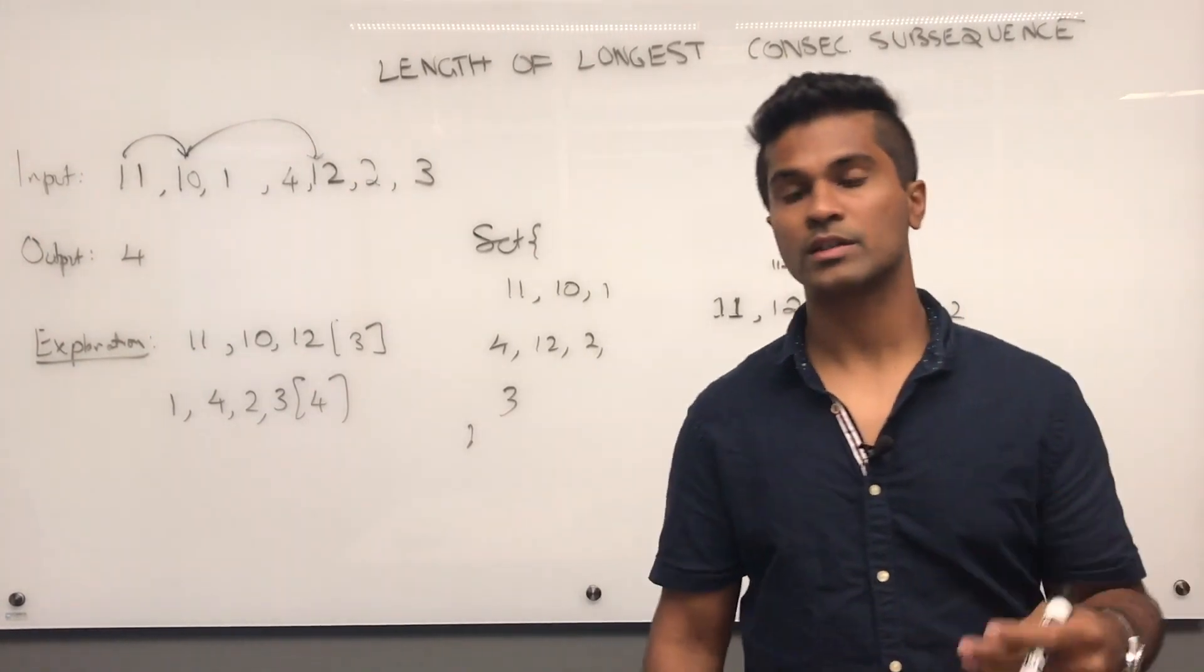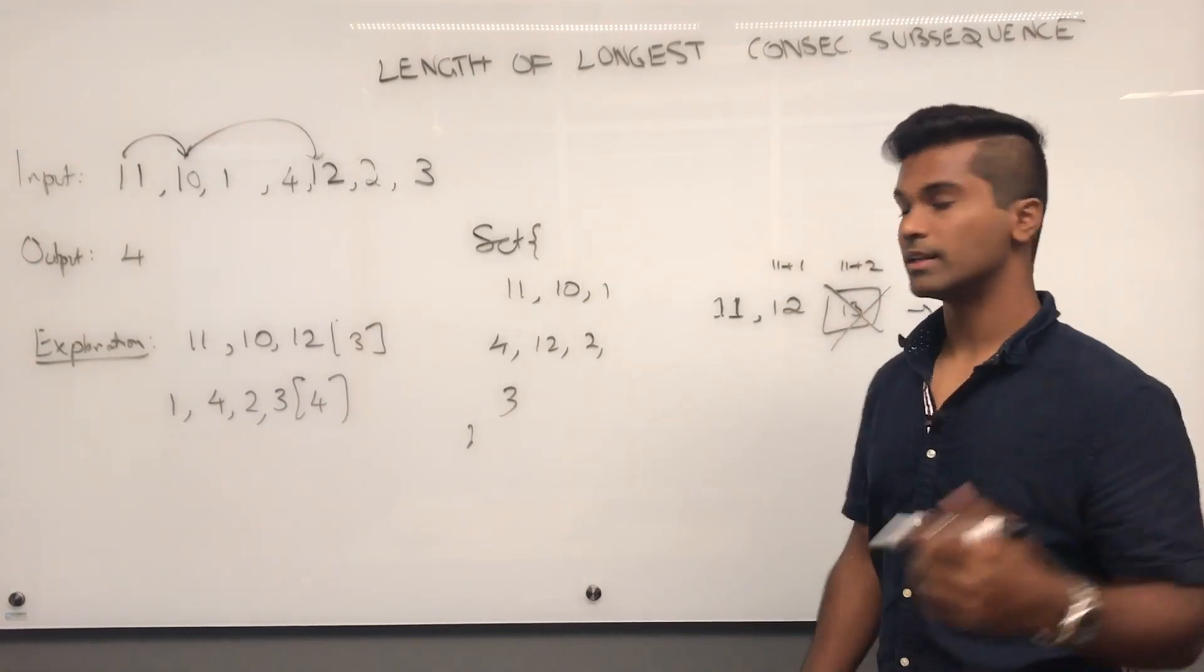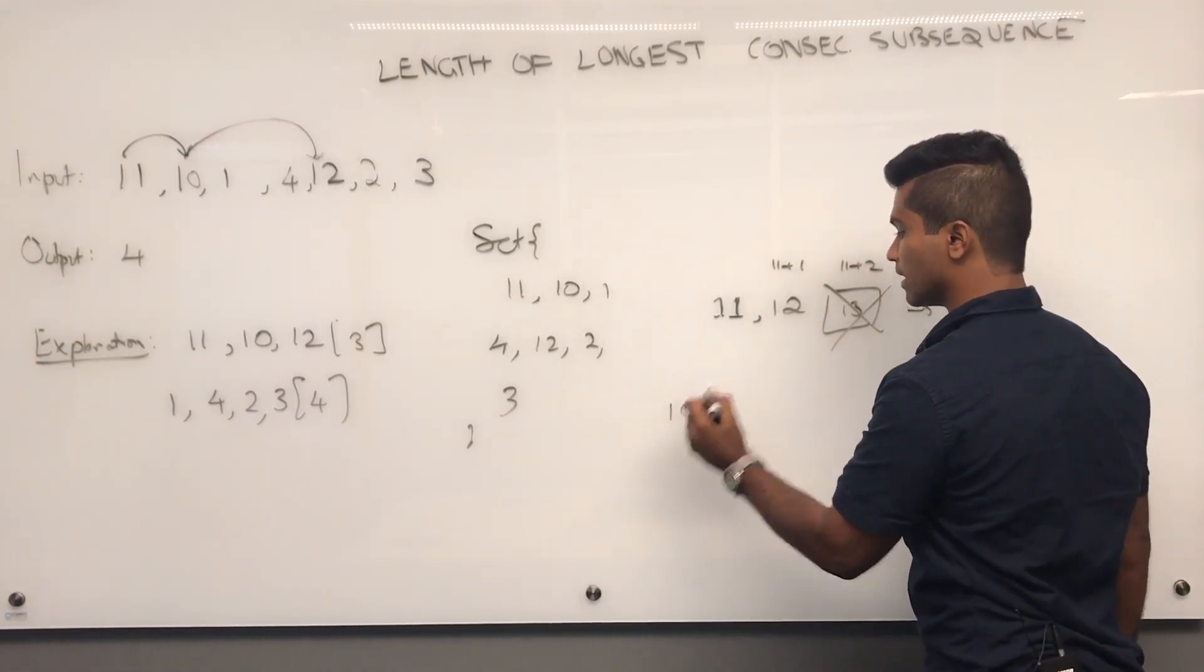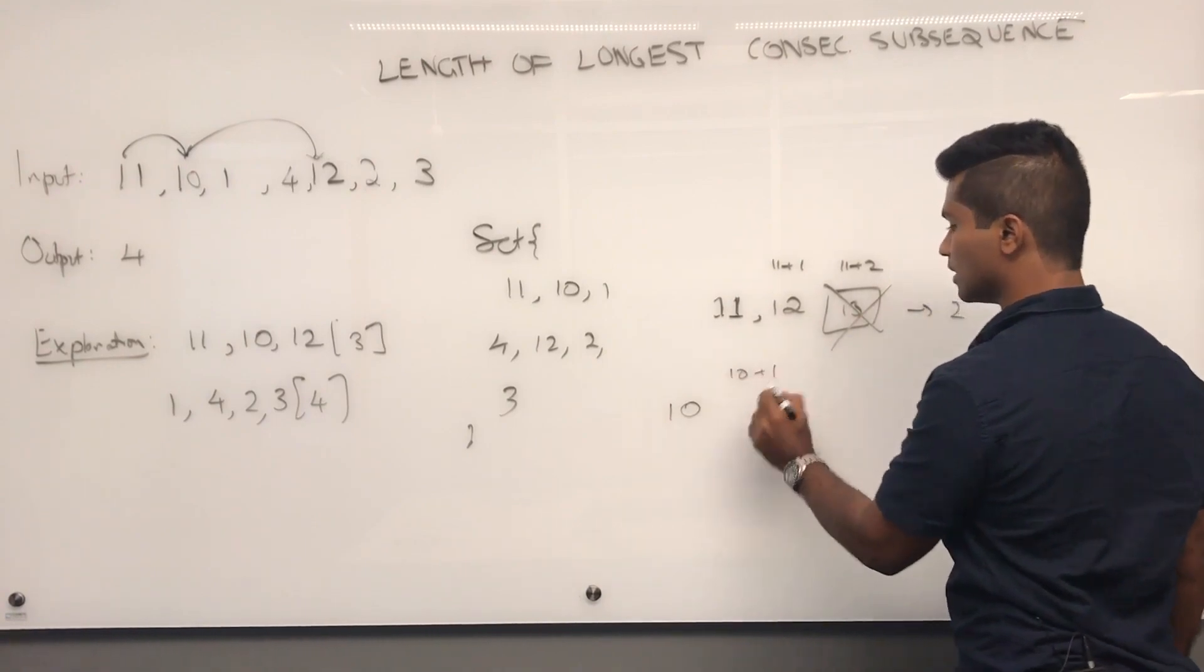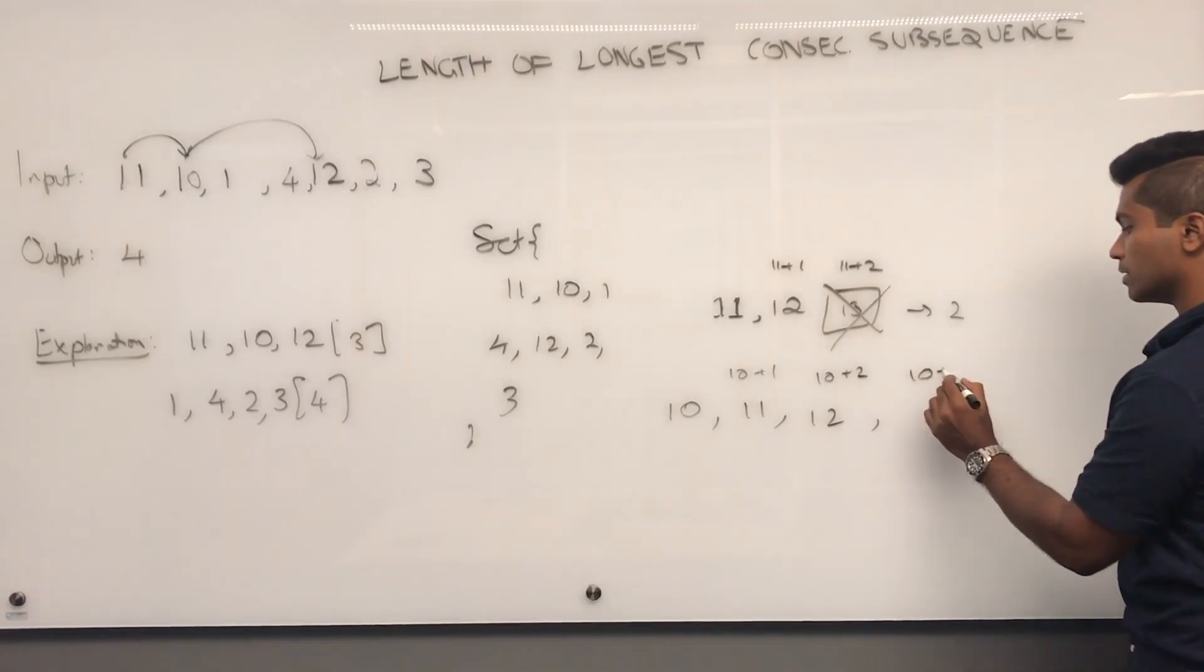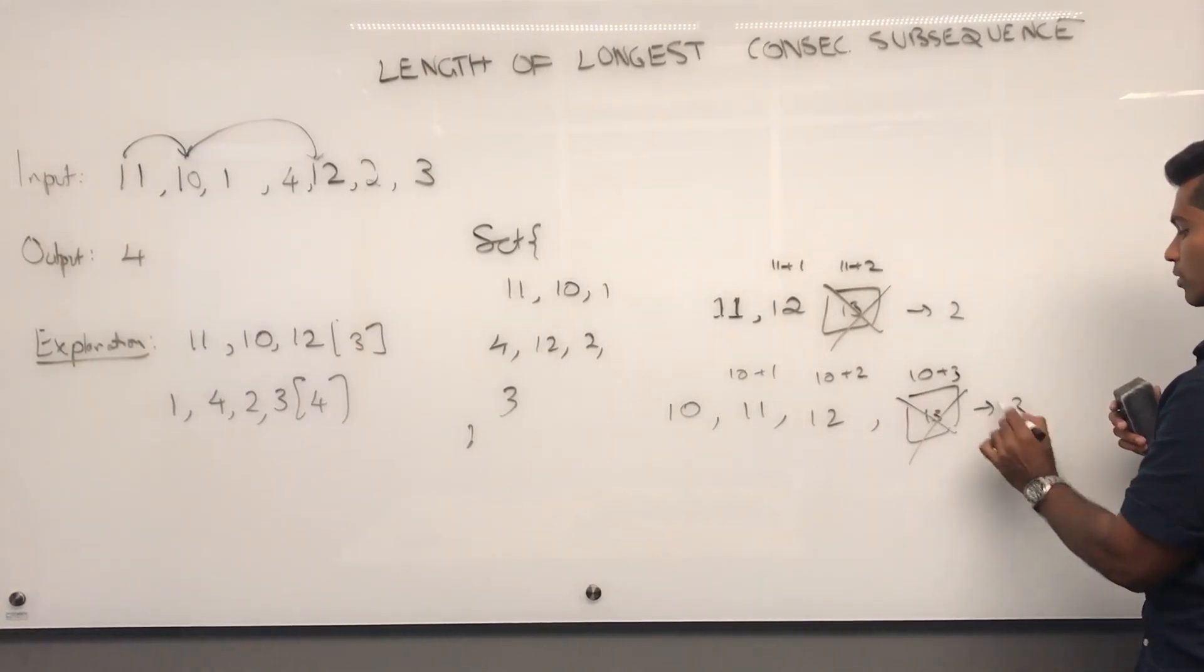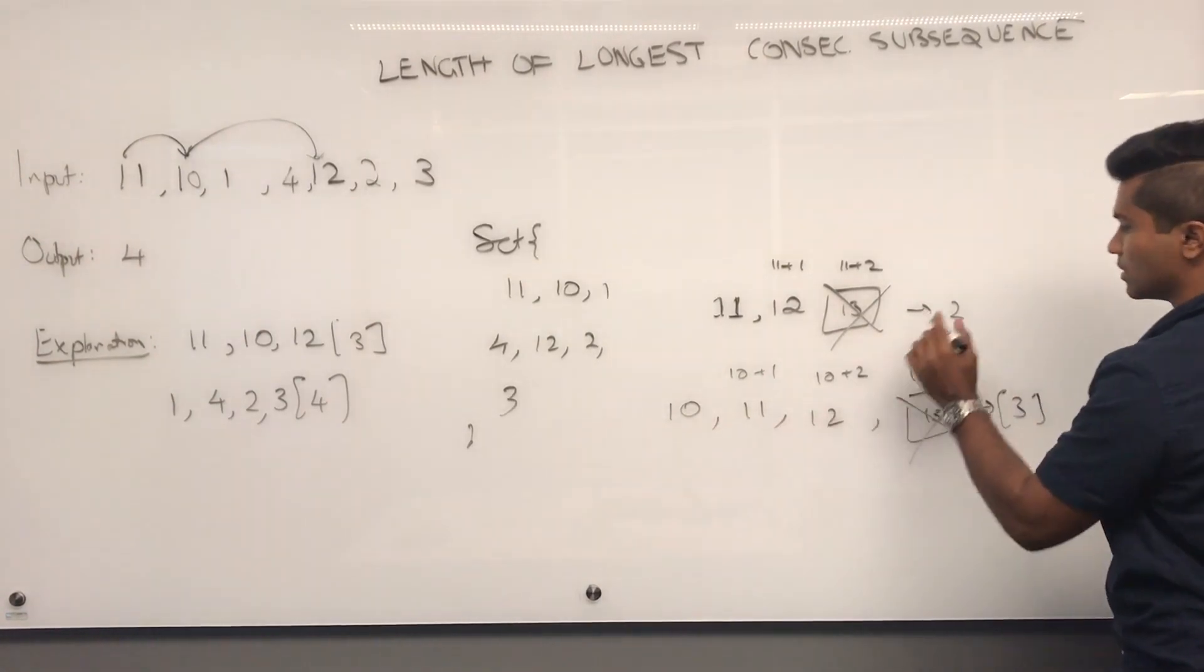However, if it notices that there's a 10, which is 1 below it, it's going to let 10 do it. Because then 10 can say 10 plus 1, 11 exists. 10 plus 2, 12 exists. 10 plus 3, 13 does not exist. But my total length, if I let 10 start it, is going to be 3.